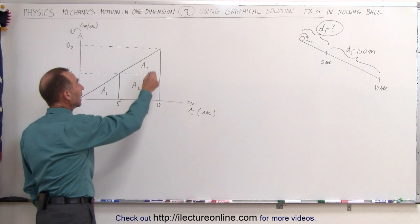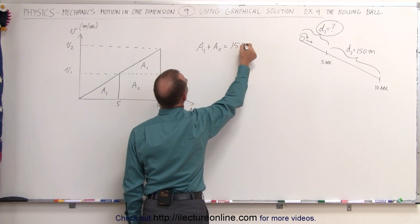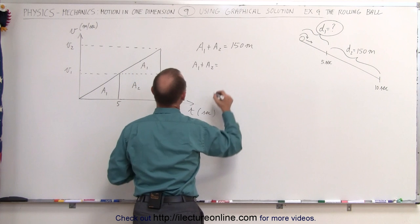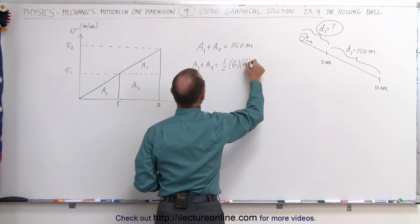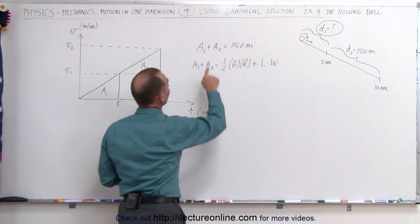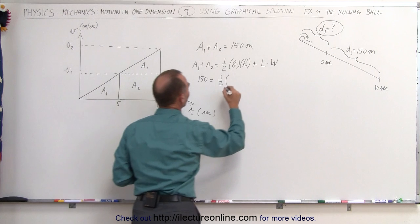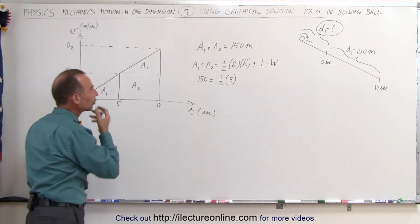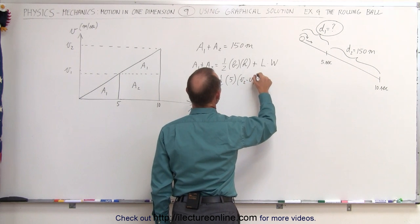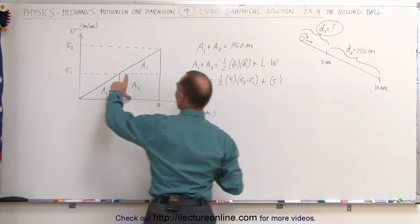What I can do is say that A1 plus A2 equals 150 meters. A1 plus A2 is equal to the area of the triangle — one-half the base times the height — plus the area of the rectangle, which is the length times the width. So plugging in numbers: 150 equals one-half times the base, which is five seconds, and the height is the increase in speed, that would be V2 minus V1, plus the length of the rectangle — five seconds — times the width, which is V1.